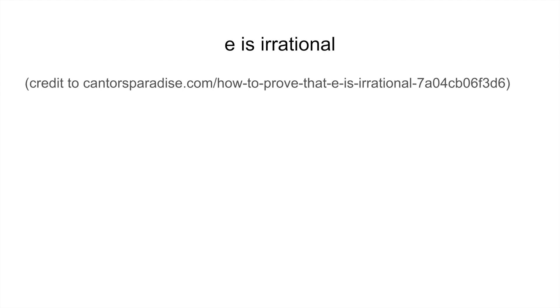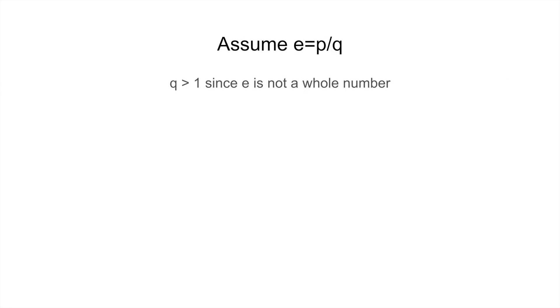We are going to use a proof by contradiction, so let's assume that e is equal to p divided by q, where p and q are integers. Since e itself is not an integer, we must have that q is larger than 1.